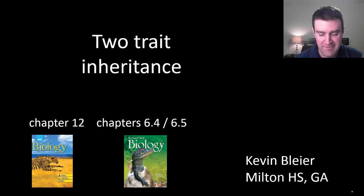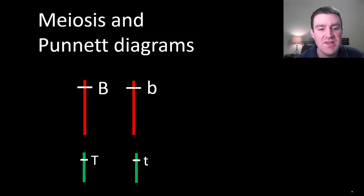In this video we're talking about a more advanced type of inheritance. What if we're studying the inheritance of two traits at the same time? We're always going to assume in our course here that the two genes are located on different chromosome pairs. If they're located on the same chromosome pair the inheritance becomes even more complex, but we'll wait till you take some more genetics courses before we discuss that.